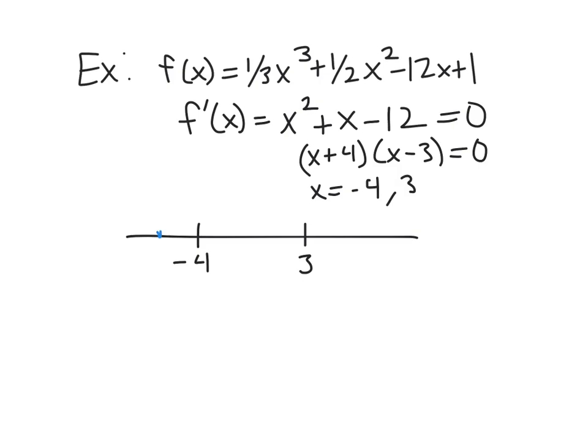And then we just pick something. So negative 5 is a reasonable value. So we would check f prime of negative 5 to talk about the whole left side here. And so f prime of negative 5 is 25 minus 5 minus 12, which is positive. So I just put a plus up there.